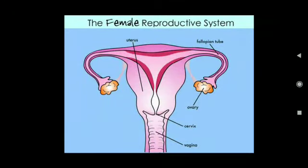The main parts of the female reproductive system are the uterus, fallopian tube (i.e. oviduct), ovary, cervix, and vagina.